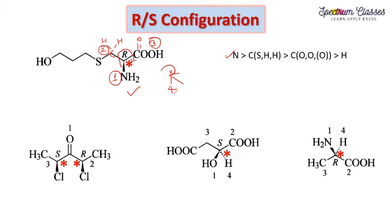For this carbon in the next example: first priority group is assigned, second priority due to the oxygen attached, and third priority for the remaining group. The fourth group is not shown, so by default it is on the vertical line. Rotating 1, 2, 3 gives clockwise and the configuration is R. The other half of the molecule is a mirror image, so it will be S — you can draw and assign that configuration yourself.